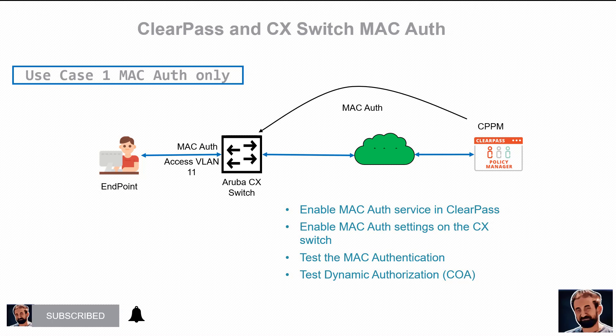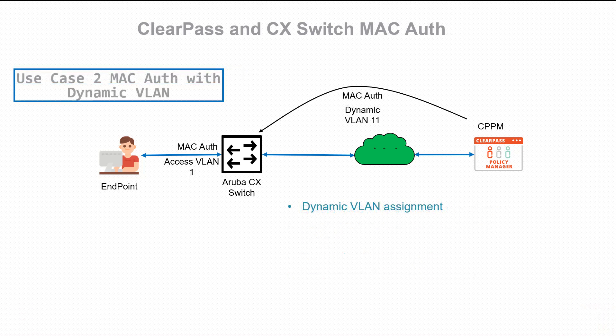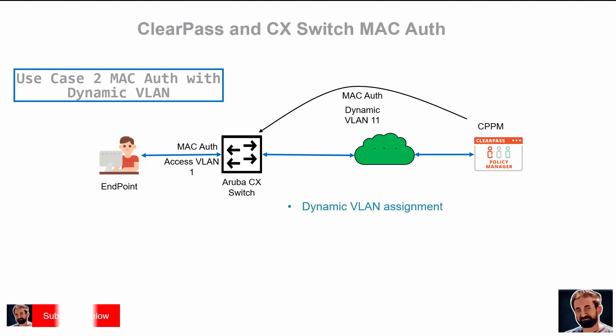In use case 1, which is only for MAC authentication, the VLAN will be fixed — the same VLAN configured on the switch port that the client connects to will remain the same after MAC authentication. In use case 2, it will be different: MAC authentication will dictate what dynamic VLAN is assigned to the switch port.